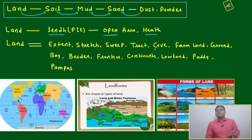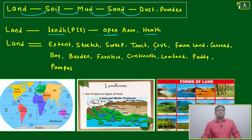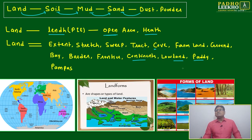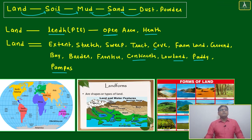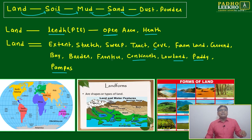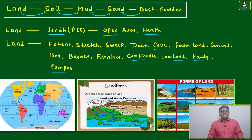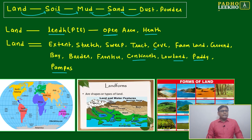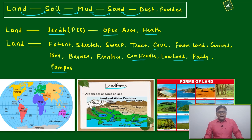Many similar or parallel words for land include: extend, stretch, sweep, tract, farmland, ground, bay, border, frontier, continents, lowland, and paddy — paddy meaning wherever rice cultivation happens. Pampas and similar words are all equivalent to land. If we say farmland, it means a kind of landmass. If we say continent, it means a particular combination of nations. There are six continents: North America, South America, Africa, Europe, Asia, and Australia.